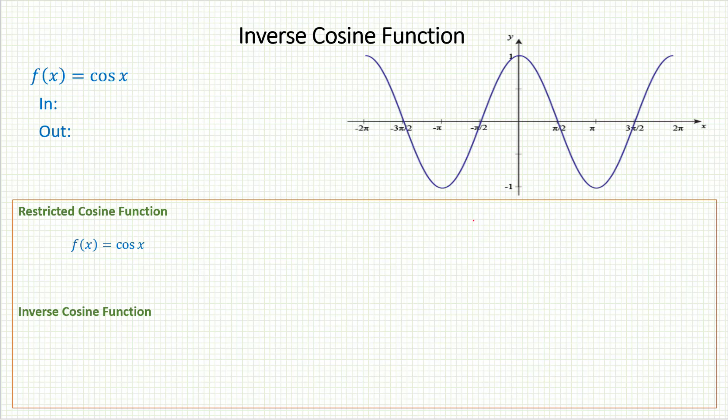Inverse cosine function. So what about the cosine function? Can we find an inverse there? Well, once again, we know that the cosine function takes in angles and sends out ratios. I've got the graph over here, and of course it has the same problem. It fails the horizontal line test, so the regular cosine function doesn't have an inverse function.